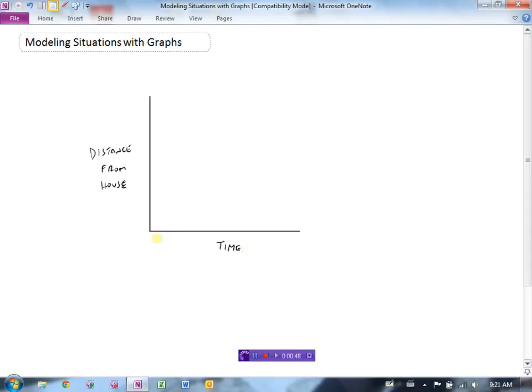Obviously when time is zero and distance is zero, you're going to start right here. The distance from your house is zero and time is zero. Let's say you're walking directly to school at a steady pace. Then your graph might look like this. As time increases, the distance from your house is starting to increase as you walk away.